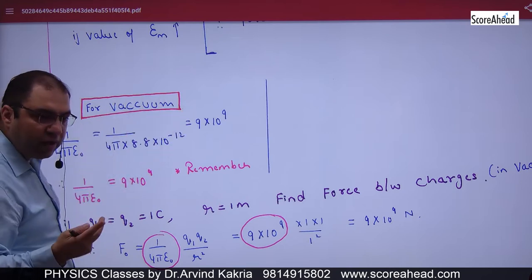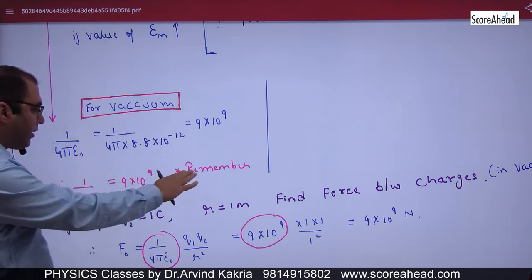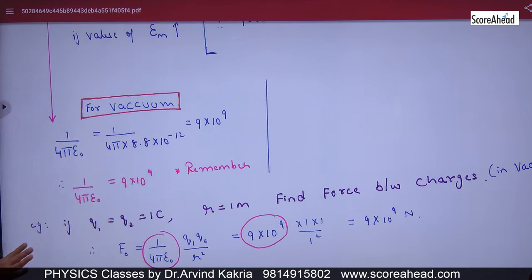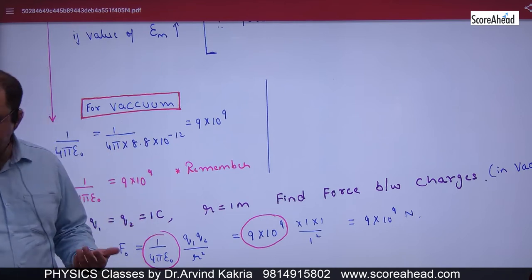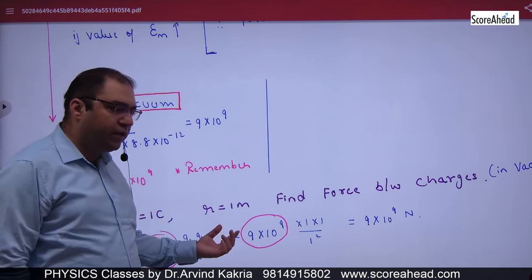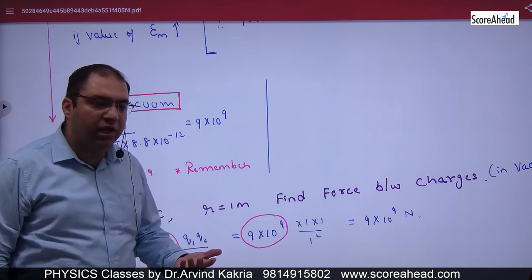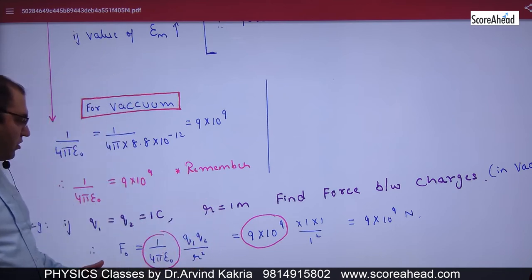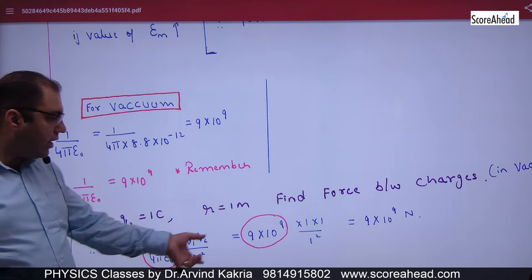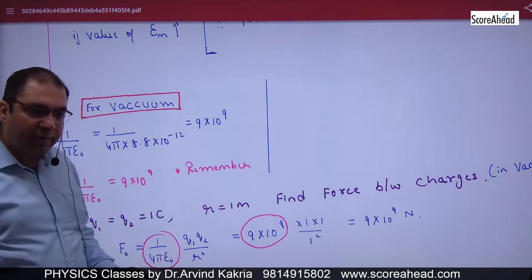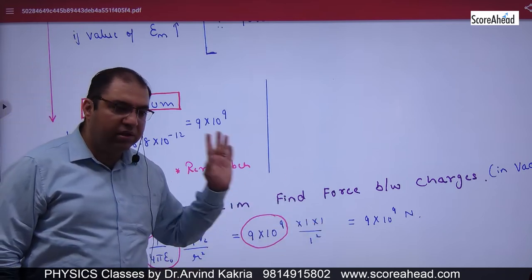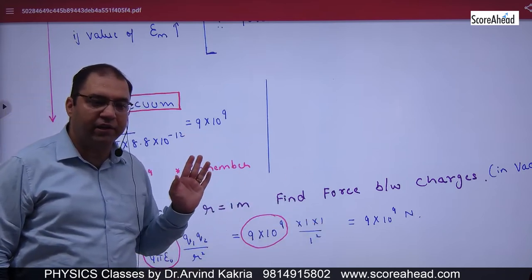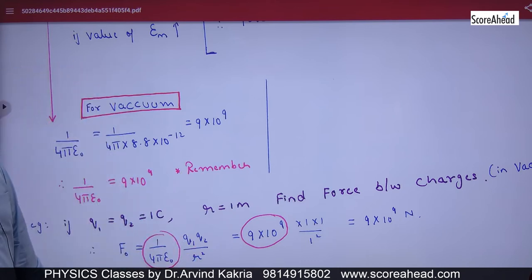Once you substitute ε₀ = 8.8 × 10⁻¹² into 1/(4π ε₀), the result simplifies to 9 × 10⁹. So remember this value. For a numerical in vacuum where Q1 = 1 coulomb, Q2 = 1 coulomb, and distance = 1 meter, the force equals 9 × 10⁹ × Q1 × Q2 / R², which gives 9 × 10⁹ N.